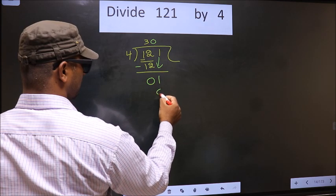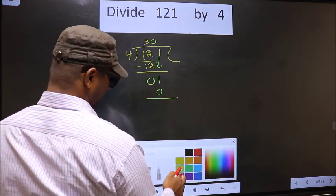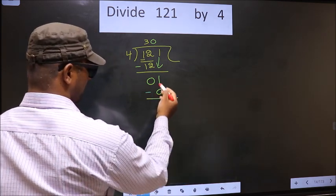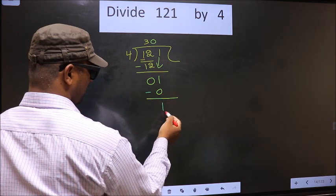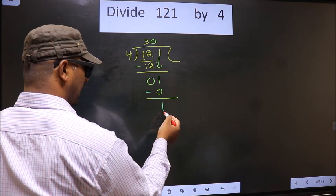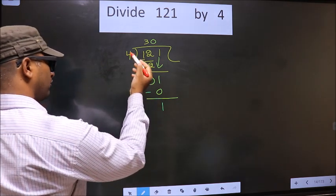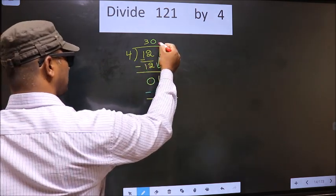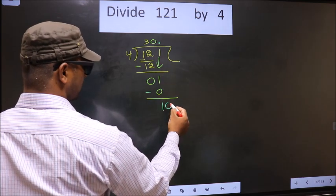So 4 into 0, 0. Now you subtract. 1 minus 0, 1. Over here we did not bring any number down. And 1 is smaller than 4. Now you can put a dot and take 0 here.